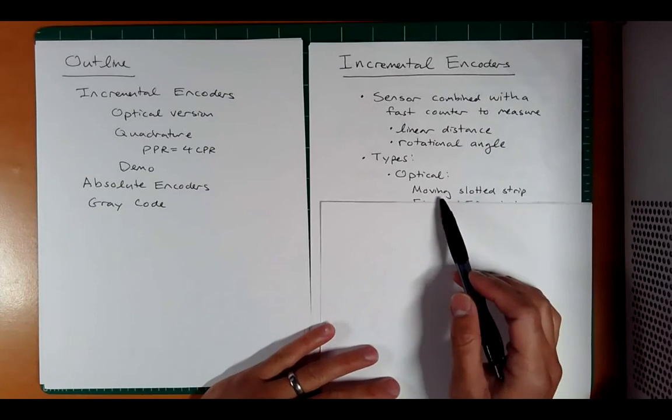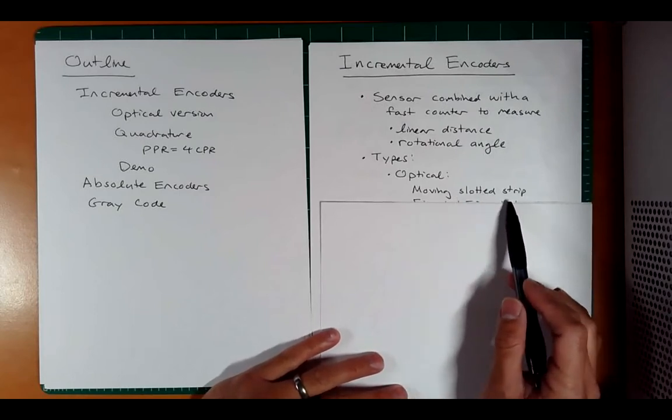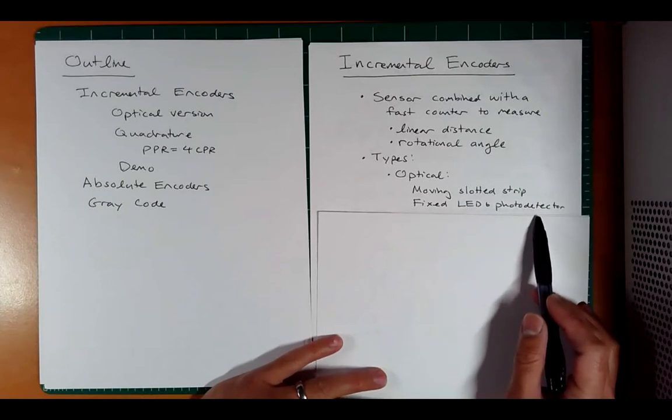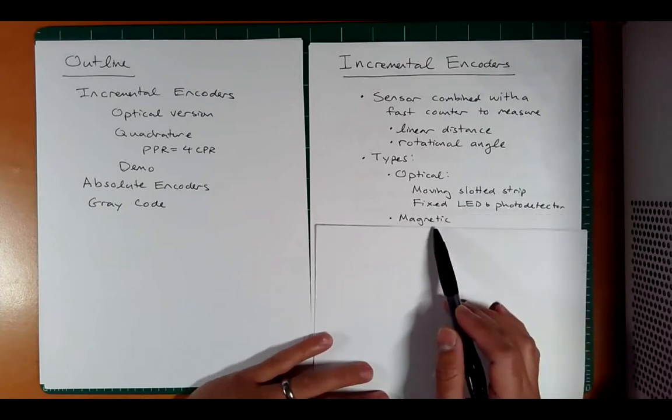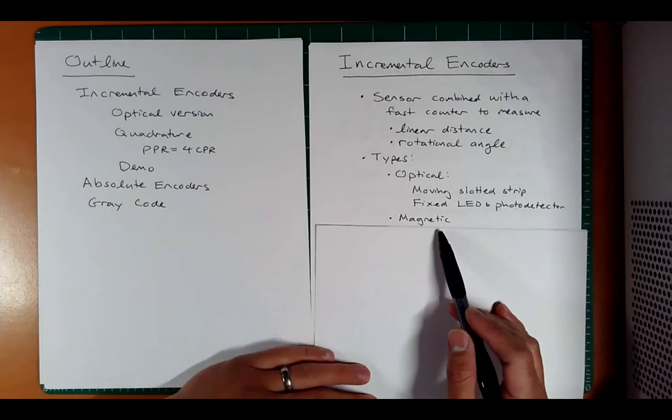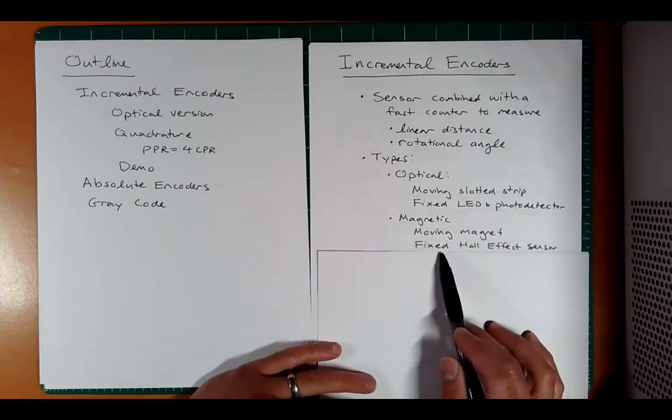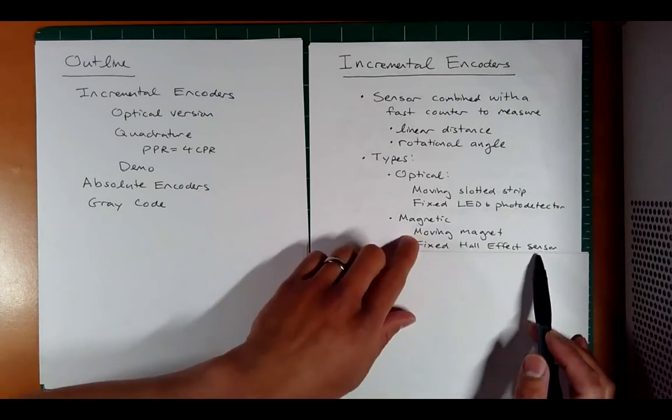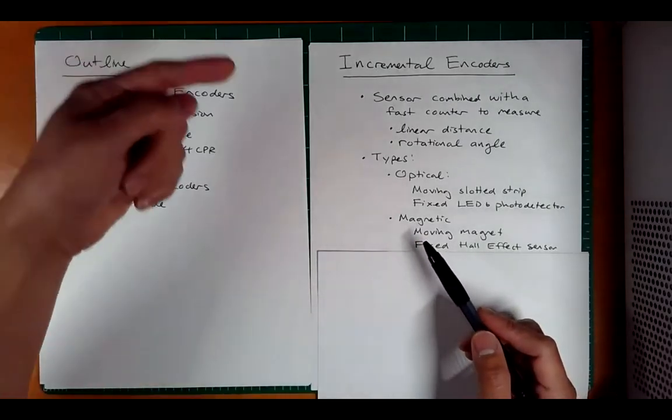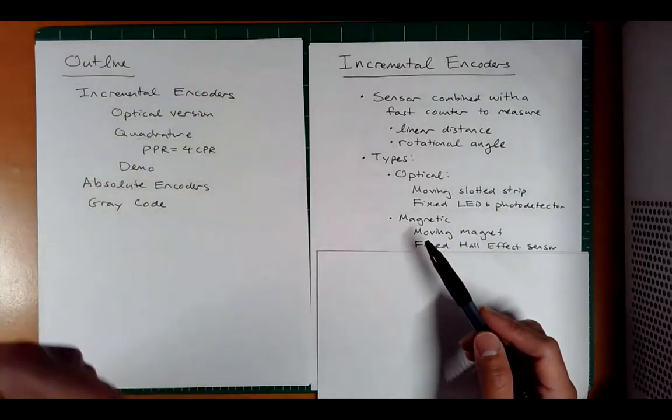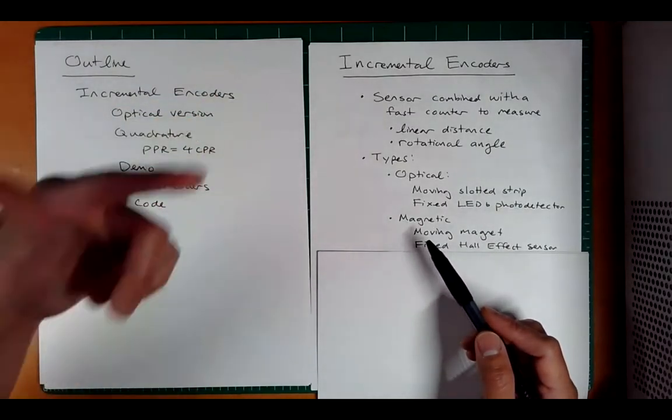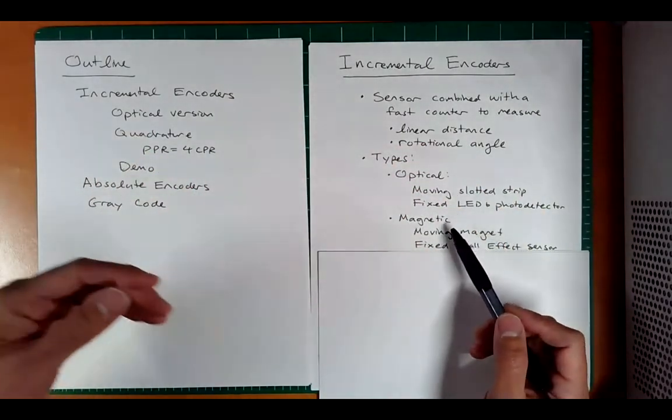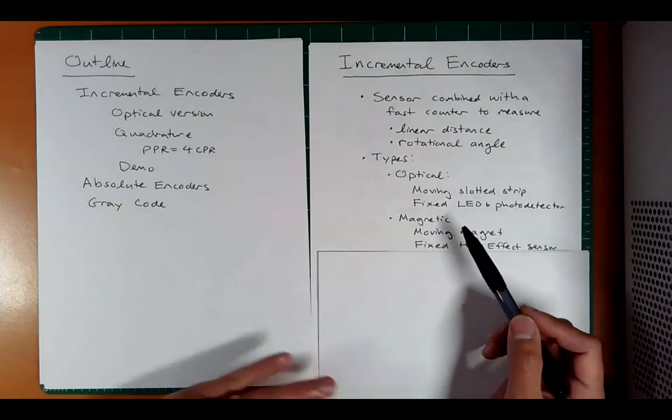Optical, and optical has a moving slotted strip and a fixed LED and photo detector setup. Now, a magnetic incremental encoder might have something like a moving magnet and a fixed hall effect sensor that counts pulses, kind of similar to your bicycle. Where as a magnet goes by, you have a hall effect sensor pickup, and you can count how many pulses. That's more for RPM, but the concept's the same.